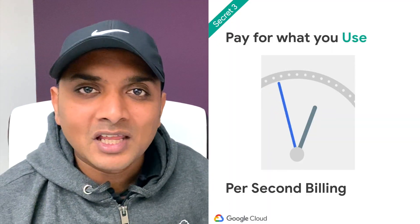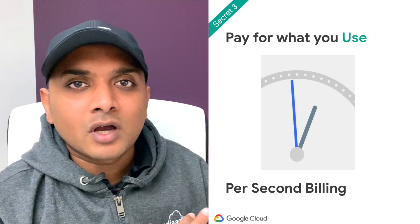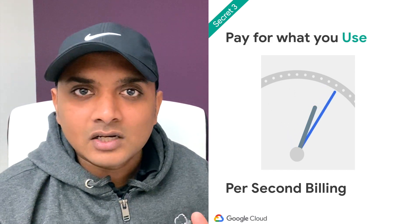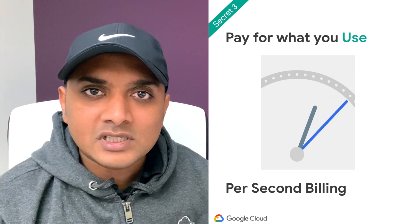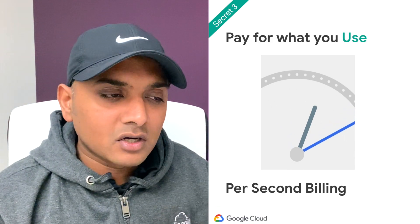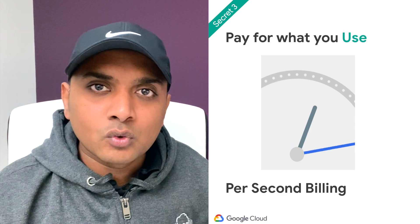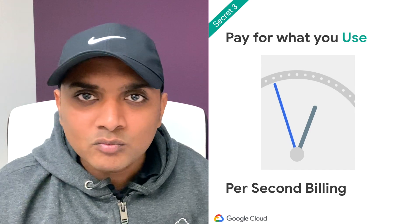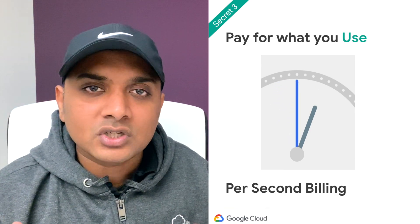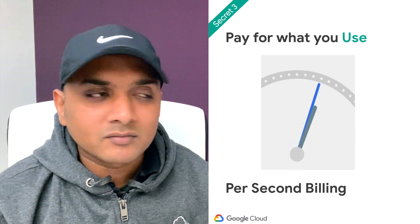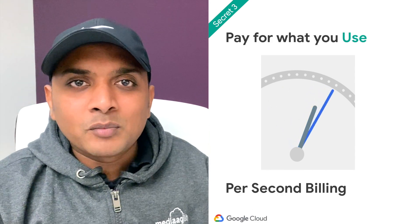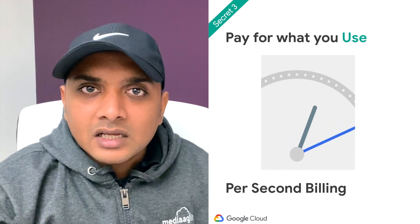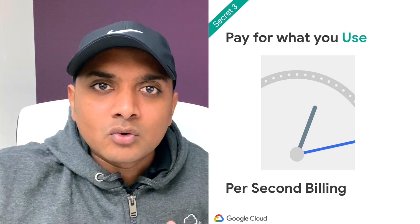Secret number three is per-second billing — pay for what you use. If you're coming from an on-premise data center, this is going to be huge for you. Instead of paying for an entire server, what if you could pay for only the consumption — each second as you consume? You can get into an OpEx model instead of a CapEx model, save a lot of money right now, and consume your compute as you go in the long run.